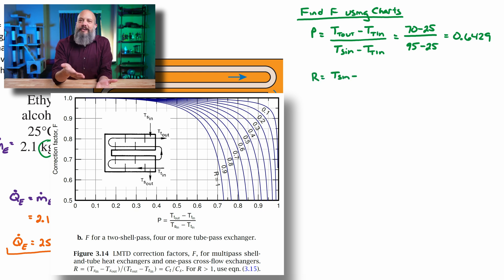And then for R, T_s,in minus T_s,out over T_t,out minus T_t,in, right? This is shell in minus shell out over tube out minus tube in, 95 minus 45 over 70 minus 25 gets a value of 1.111.